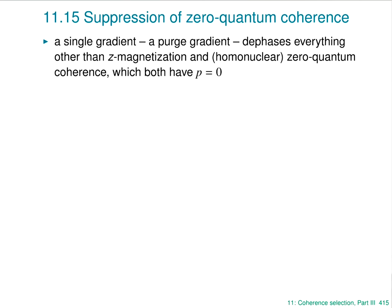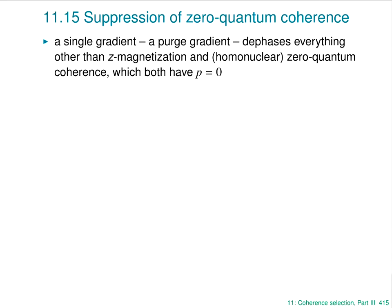The second topic is zero quantum coherence. Z magnetization doesn't respond to a Z rotation and therefore has coherence order zero. Zero quantum coherence also doesn't respond to a Z rotation, so it also has coherence order zero. When selecting coherence order zero, you can't avoid the fact that selecting Z magnetization simultaneously selects zero quantum. For example, in a NOESY experiment during the mixing time you want to select Z magnetization, but you'll also be selecting zero quantum — the two things have exactly the same properties and it's very difficult to disentangle them.